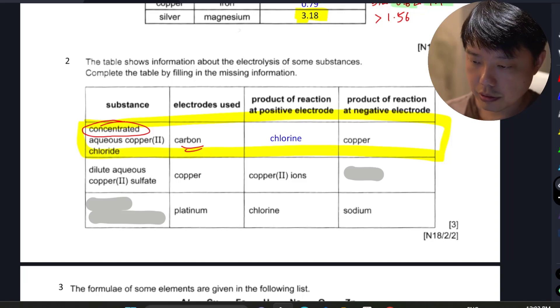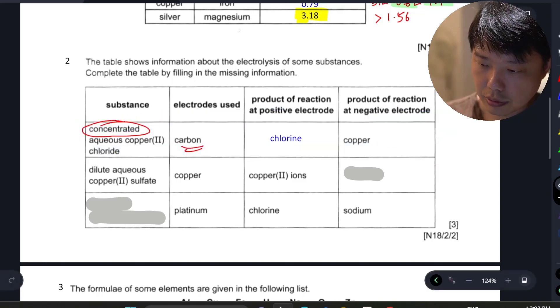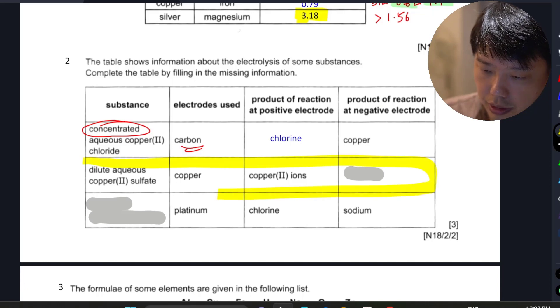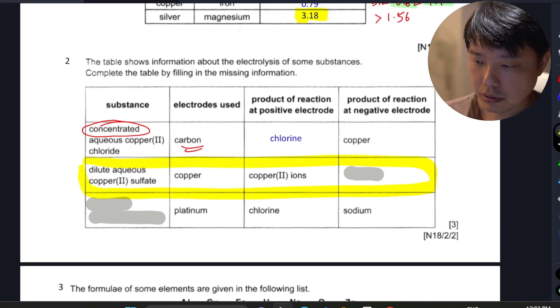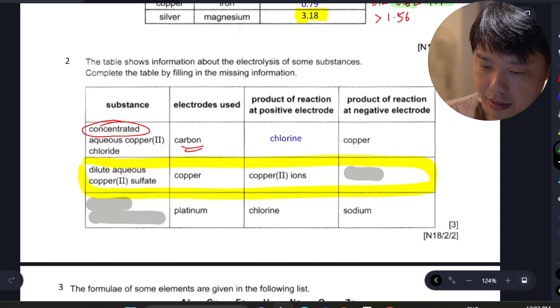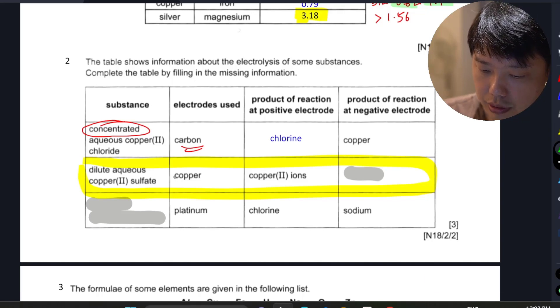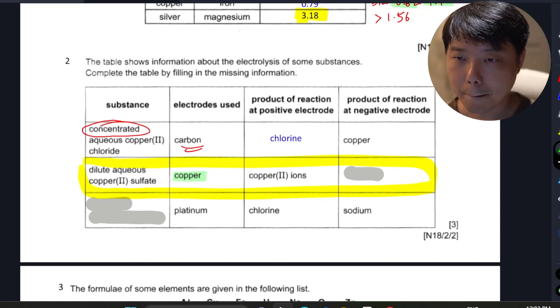So the second part of this question, let's zoom in on the second part where they actually ask you, what is the product at the cathode? What's interesting here is that the electrode used is not inert, it's actually copper metal.